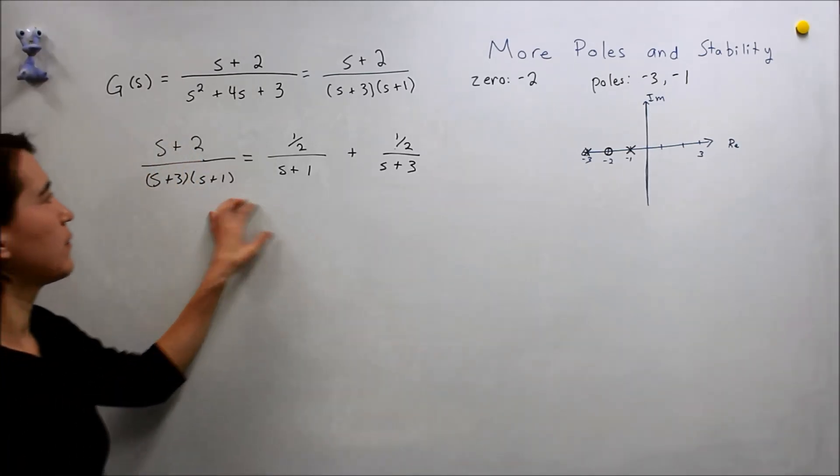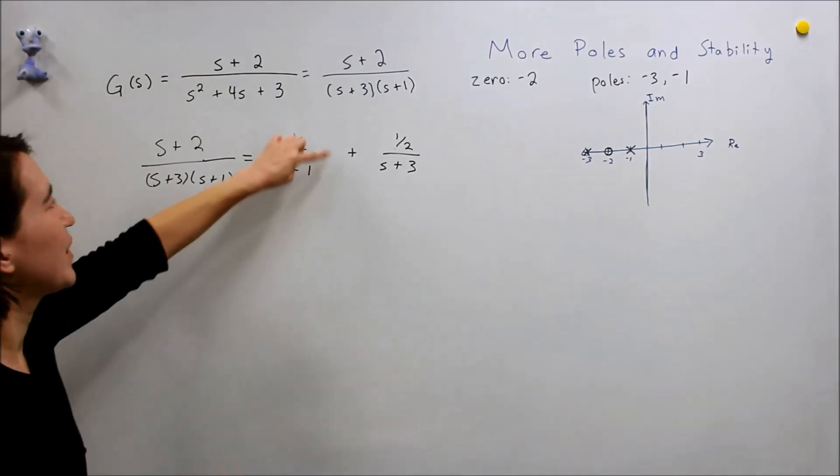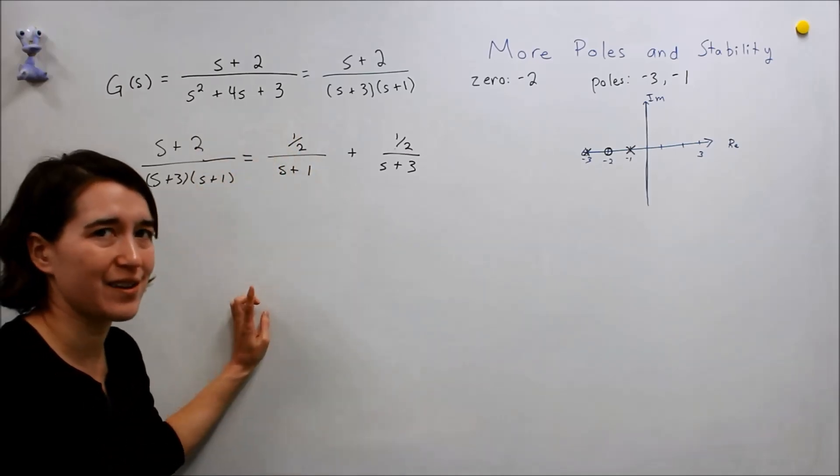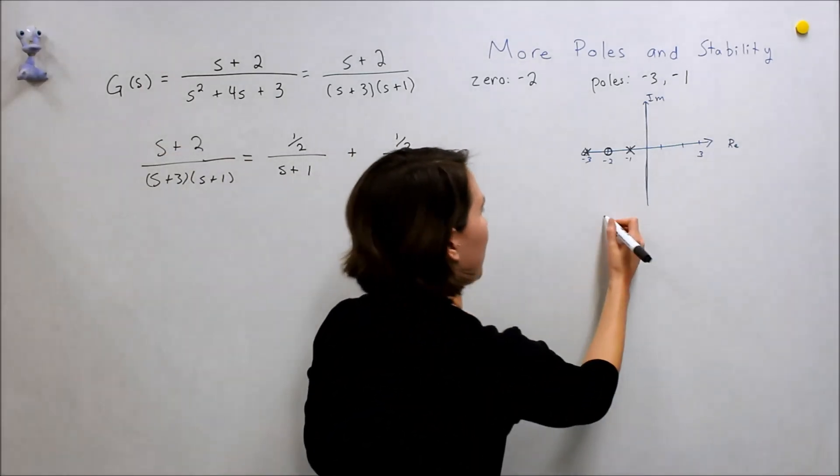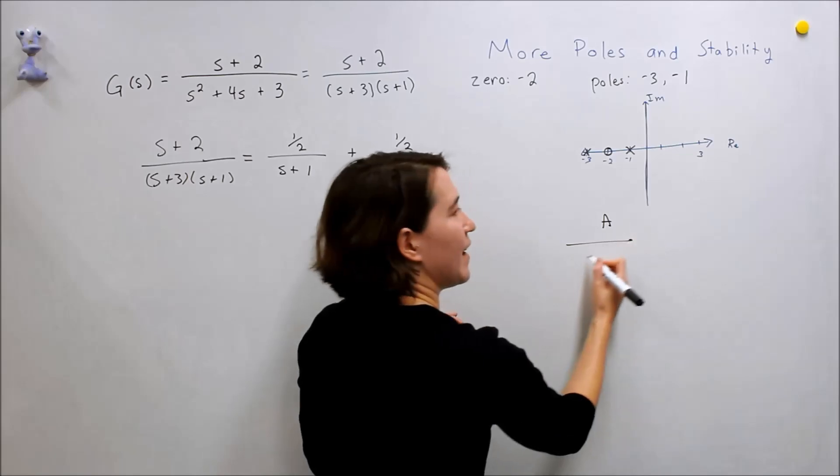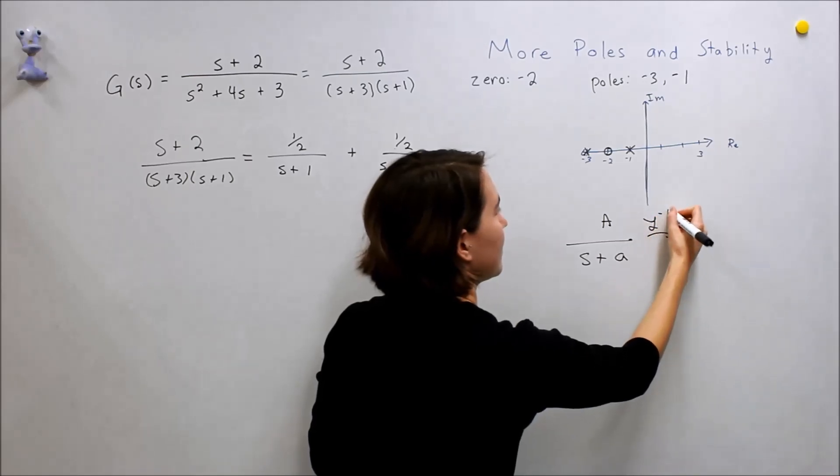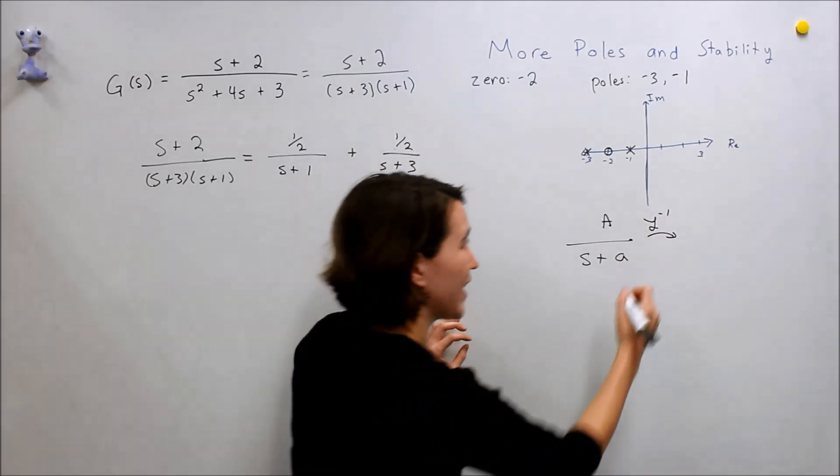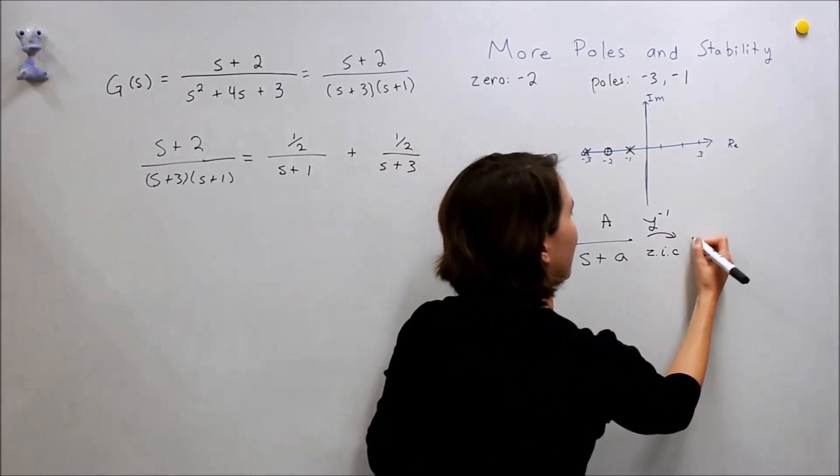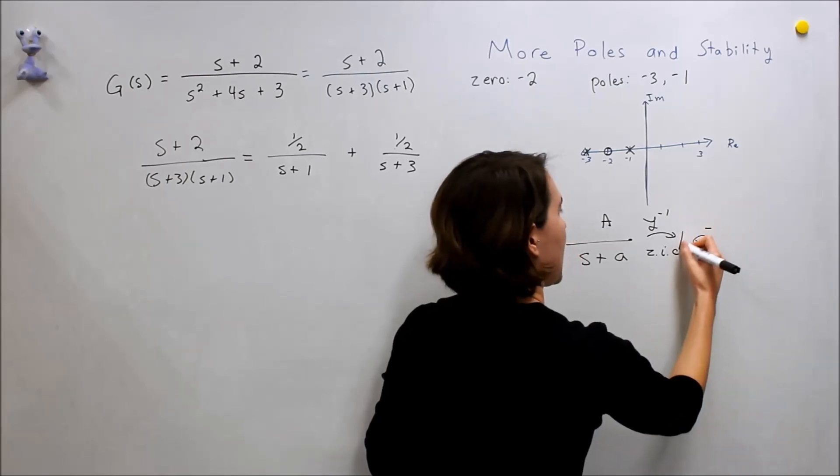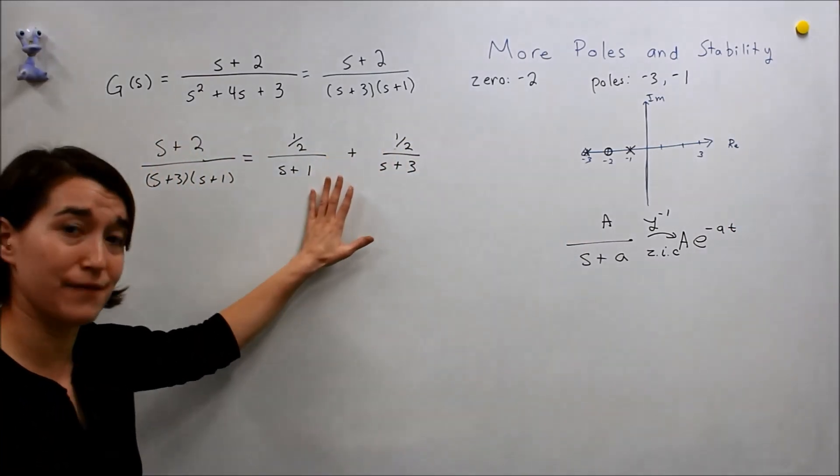Now we have, we've broken our fraction apart. If you remember from last time, we look at this, we take the reverse Laplace transform. It should be a familiar exponential. I'll just write it here because I always forget it too. Say we have a constant at the top, s plus little a here. If we take the reverse Laplace, and I'm going to go ahead and assume zero initial conditions, then we know that this is exactly a times e to the negative at.